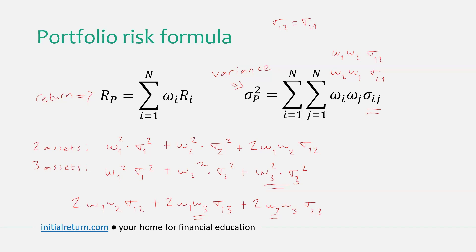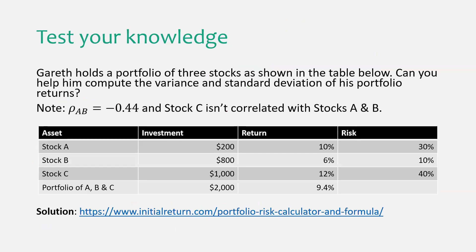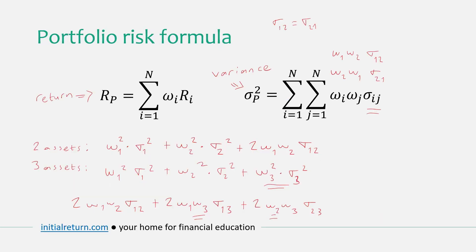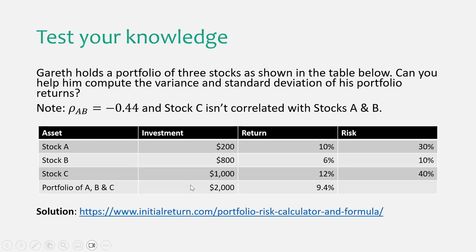Here's an example for you to test your knowledge: we have three stocks in the portfolio, and you can use the formula shown to compute portfolio risk. In this particular example the third stock is uncorrelated with the previous two stocks — we have exactly the same stocks A and B as before and simply introduce a third stock — which actually speeds up the calculations. You can find the solution to this exercise on our website, and you can double-check your answers with our portfolio risk calculator. The link is in the video description.